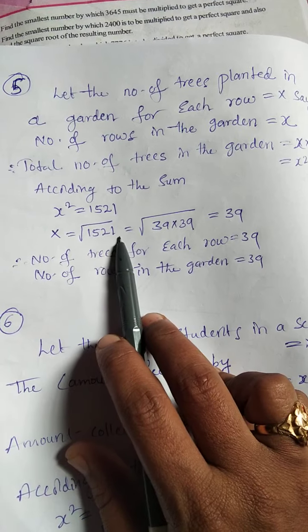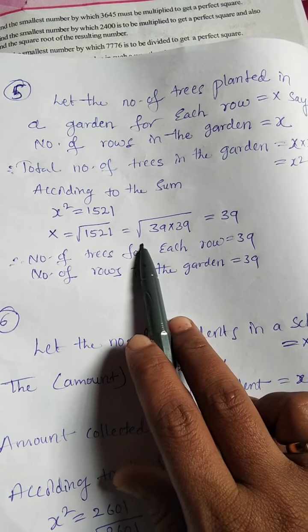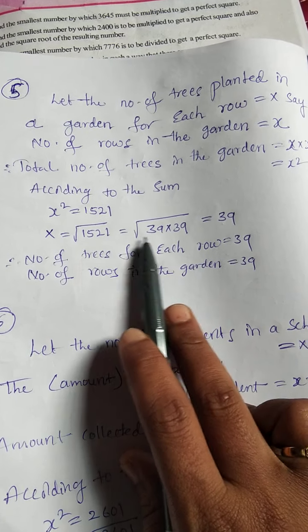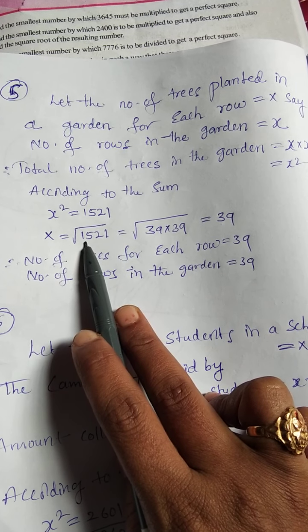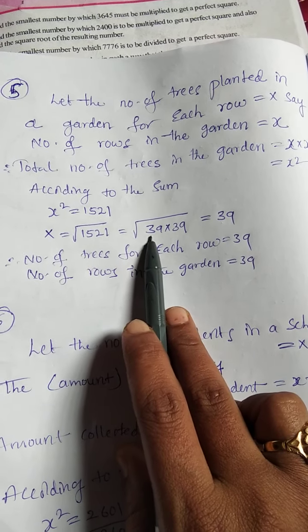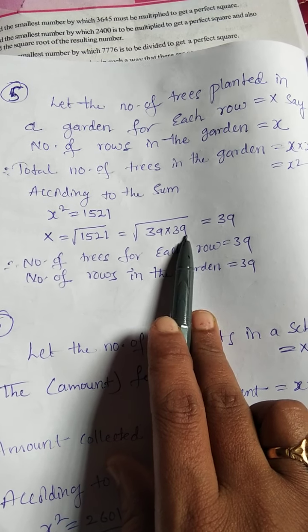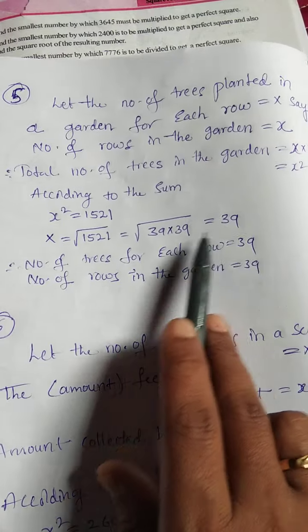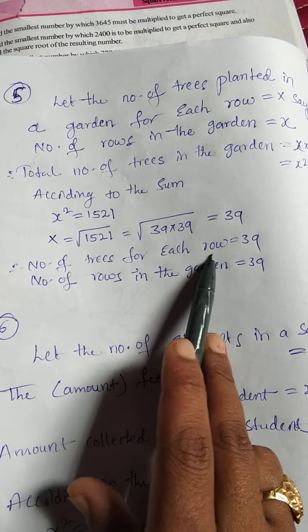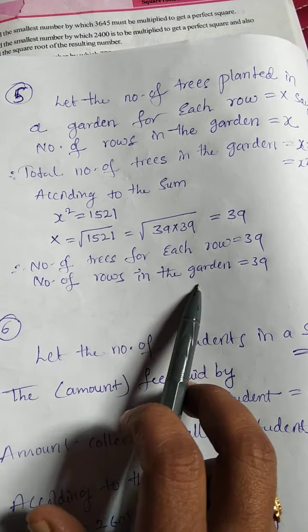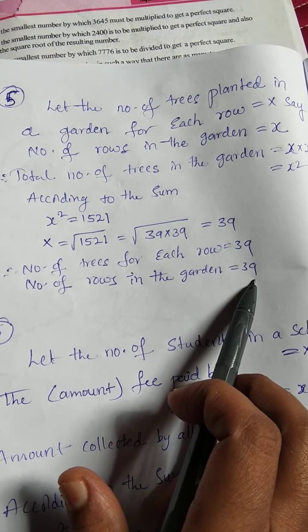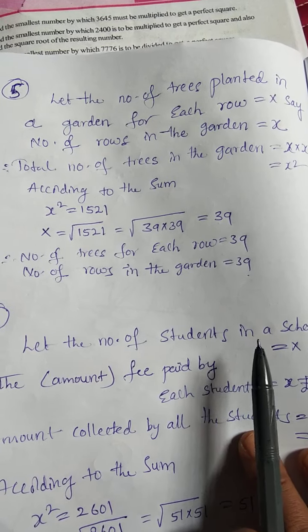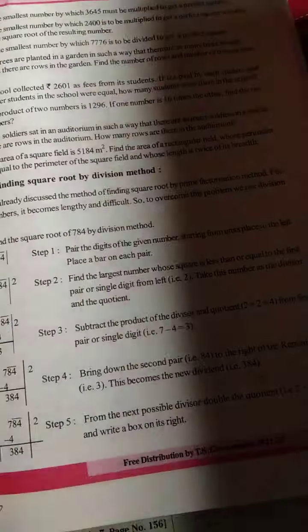x is equal to square root of 1521, which equals square root of 39 into 39. We can express 1521 as 39 squared, so the square root gives us 39. Therefore, the number of trees in each row is 39 and the number of rows in the garden is 39. I hope you understood.